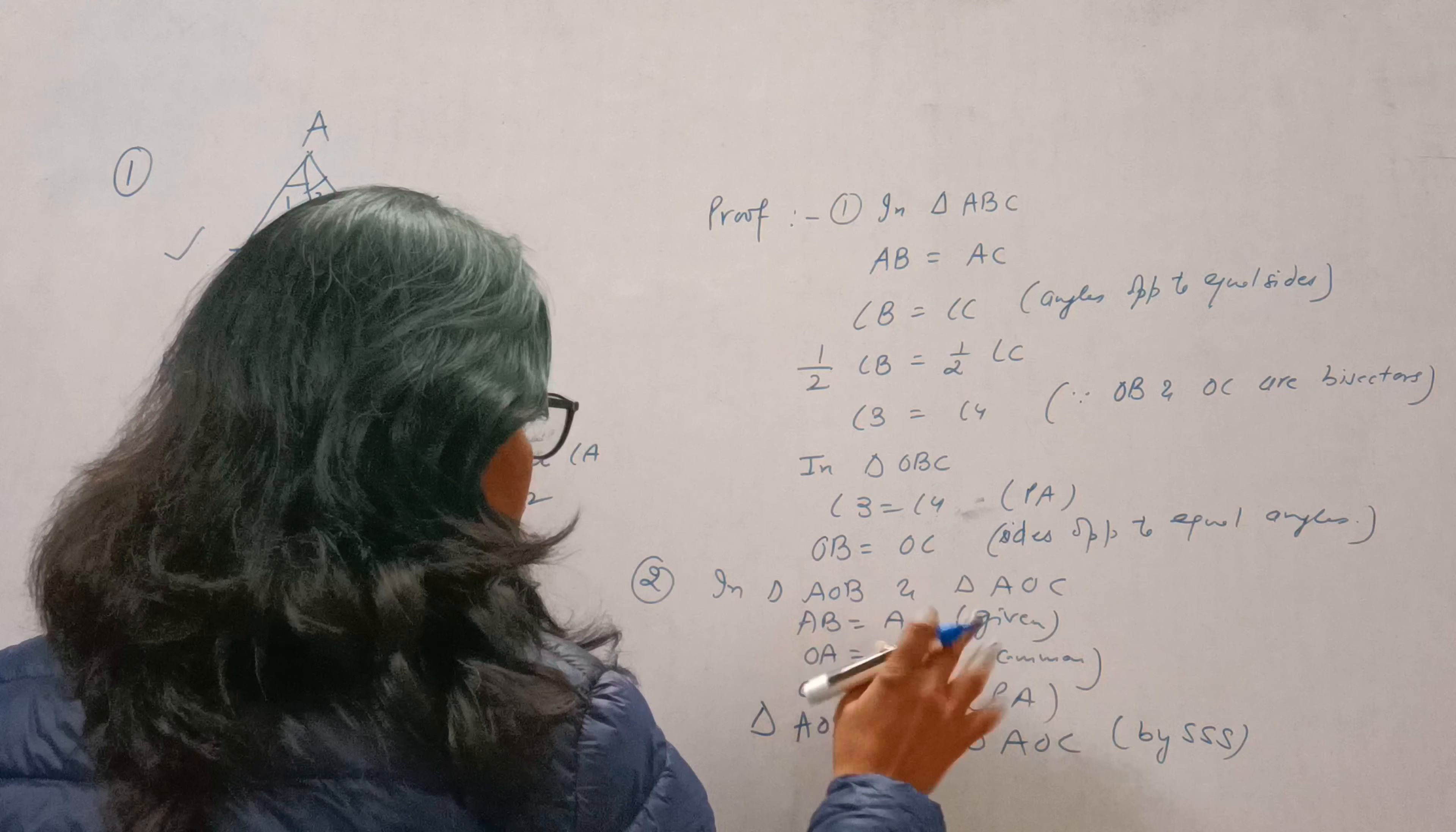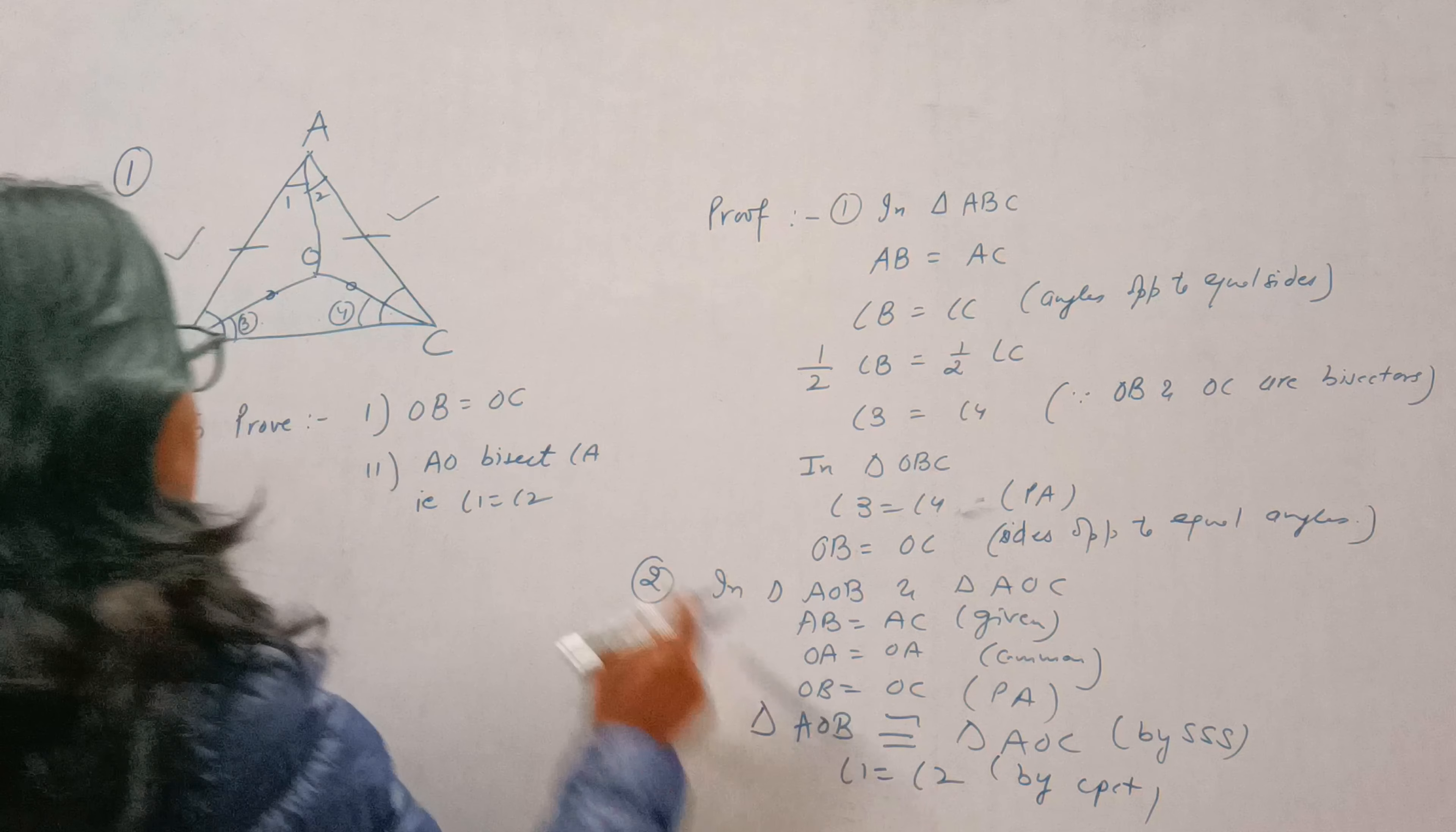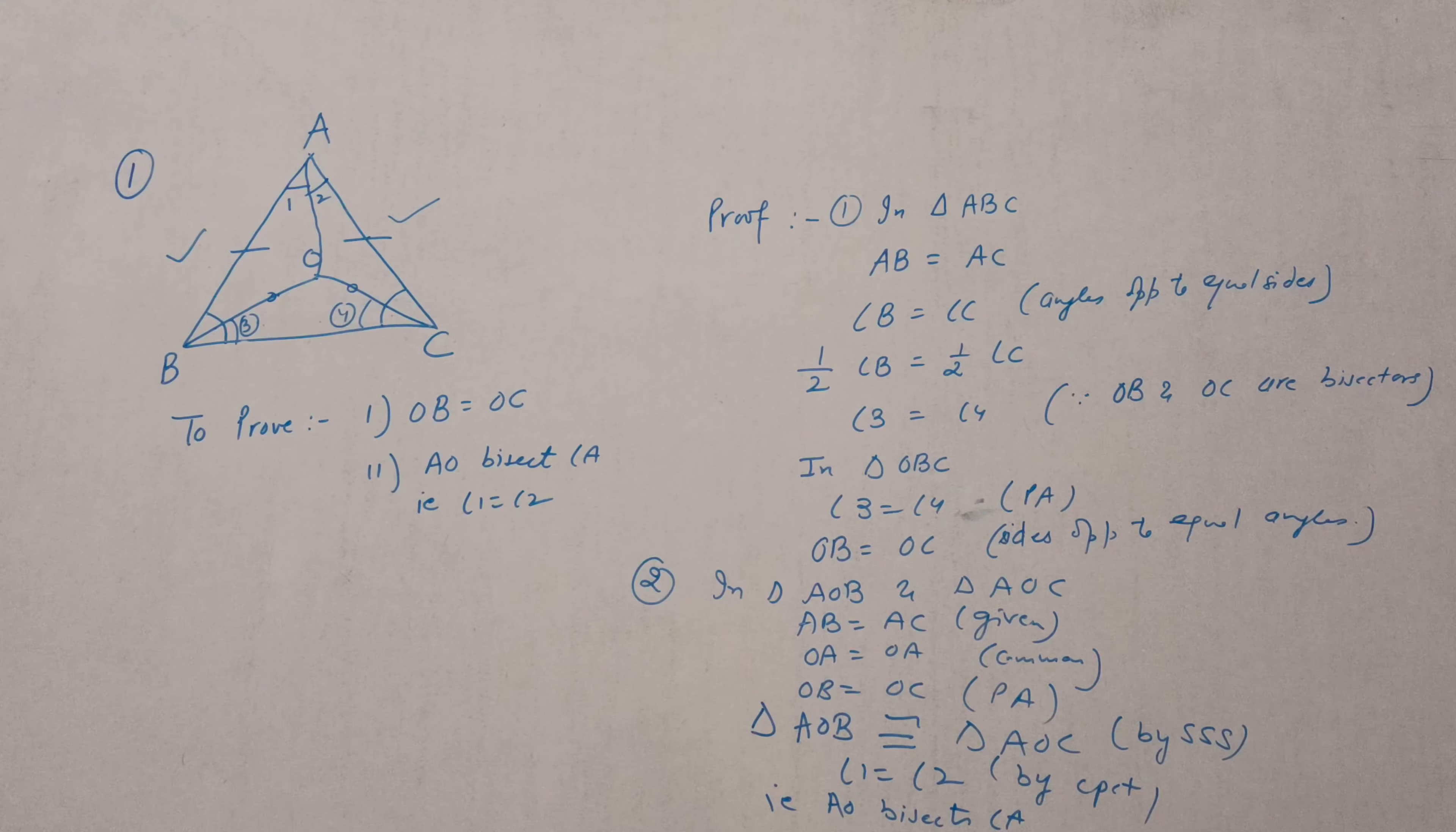Three sides are equal. And if these two triangles are congruent, then angle 1 is equal to angle 2 by CPCT. Angle 1 equal to angle 2 means AO bisects angle A. Hence proved. So this is question number 1 of exercise 7.2. I hope you all have understood. Thank you for watching.